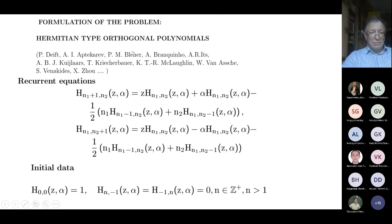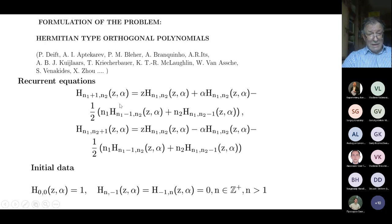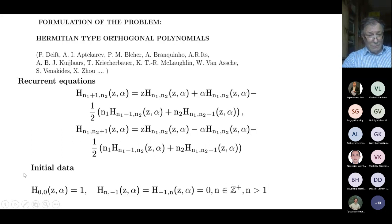We'll speak about the semi-classical approximation. The problem we discussed with Aptekarif, Tulikov and Cvetkova concerns the so-called two-dimensional Hermitian type orthogonal polynomials. We have recurrent equations for them: alpha is a parameter, z is a variable, and it depends on variable z and on alpha as a parameter. These numbers n1 and n2 are a generalization of the Hermitian polynomial.